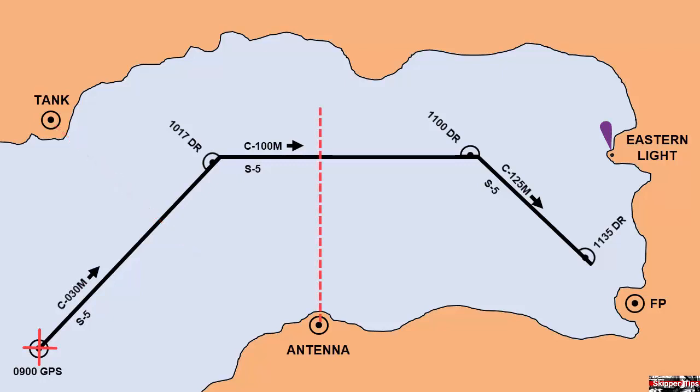Now once we turn on to our second leg, we can use the antenna off our beam to show our advance along the course, and we also have eastern light ahead, which we can use to show whether we are right or left of track.